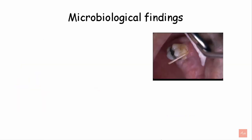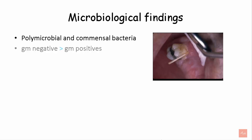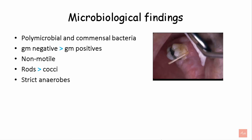Samples for microbial culture from periodontal abscess or periodontal pocket can be collected using paper points or surgical curettes. The microbiology associated with periodontal abscess is polymicrobial with commensal bacteria. Gram-negative bacteria dominate over gram-positive bacteria. They are non-motile, with more rods seen compared to cocci, and they are strict anaerobes — similar to those present in chronic periodontitis patients.